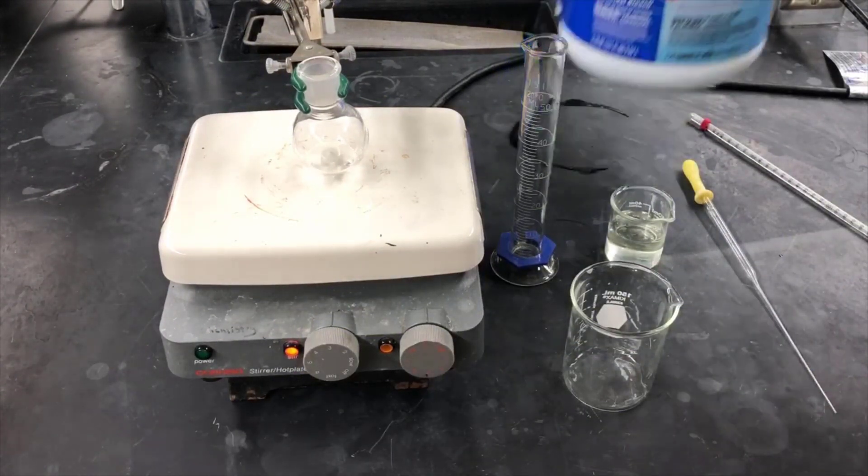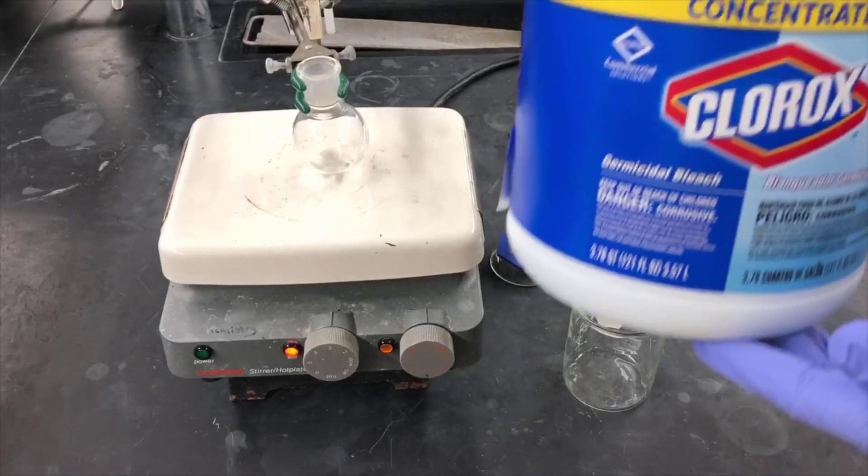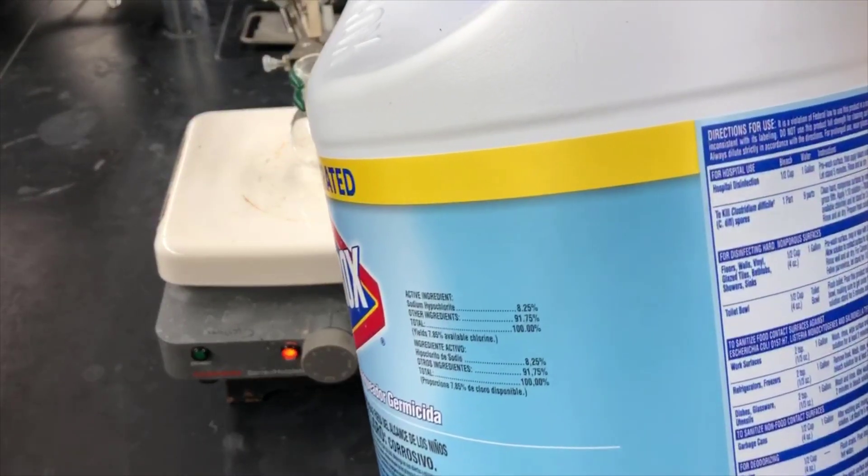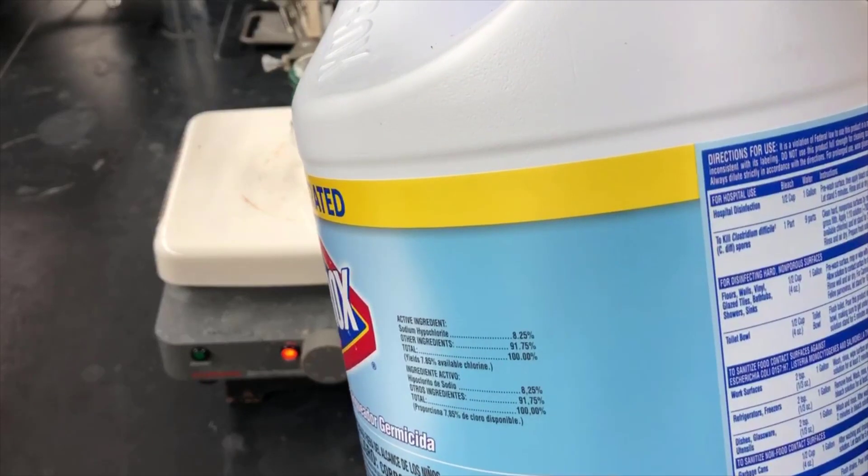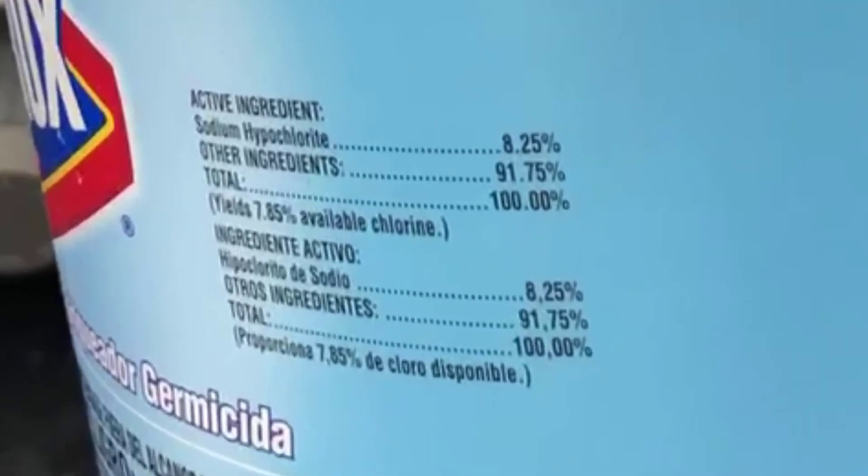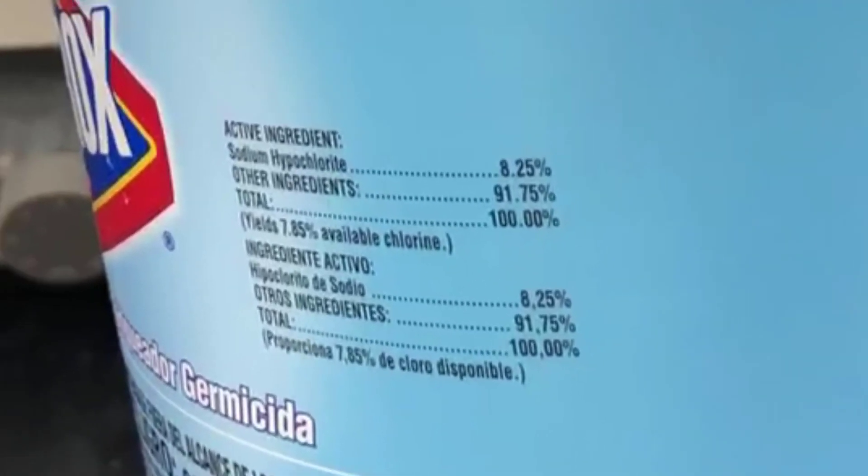Bleach is the oxidant in today's experiment. Bleach is an aqueous solution of sodium hypochlorite. It comes in a range of concentrations from 5% by mass up to around 10% by mass. Take a look at the bottle to see what you've got. This particular bottle is 8.25% by mass.